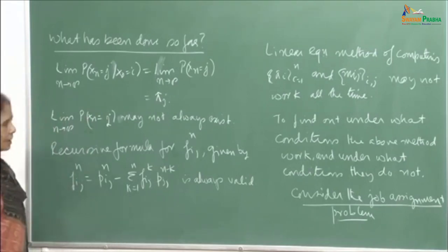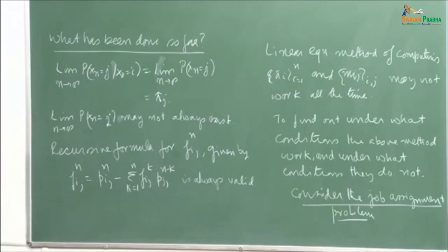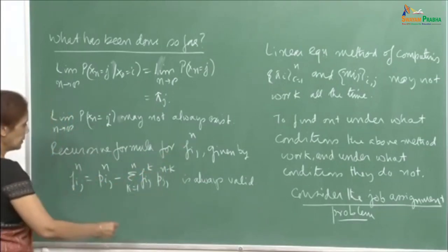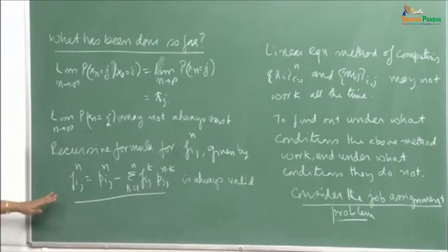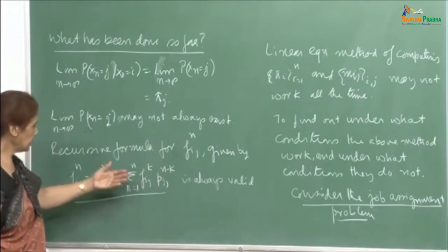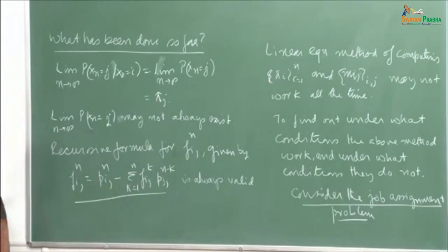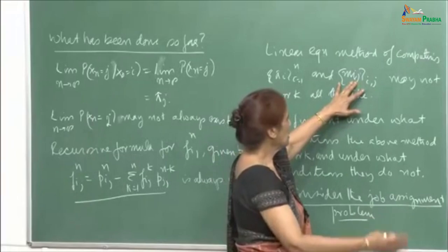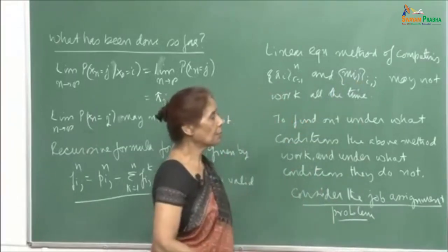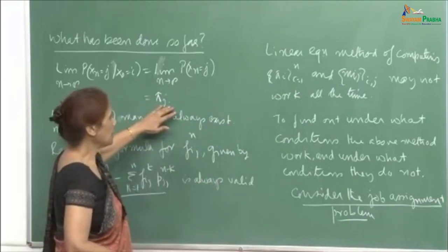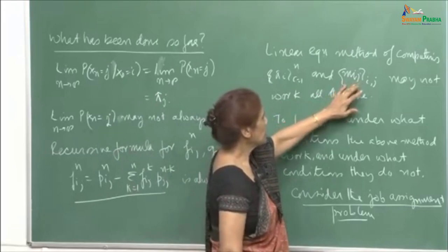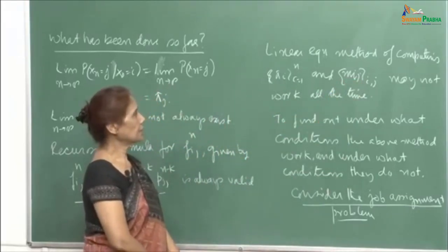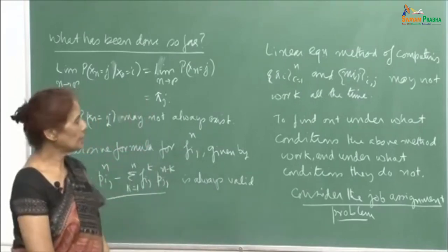The linear equation method of solving the pi_i's depends on whether this limit exists and is independent of the starting state. We could write down the system of linear equations with the condition that sigma pi_j's add up to 1. We will now look at the conditions under which this limit exists. The recursive formula for f_ij(n) is valid since powers of p can be computed. But the m_ij equations also need to be examined under what conditions the method will be valid.